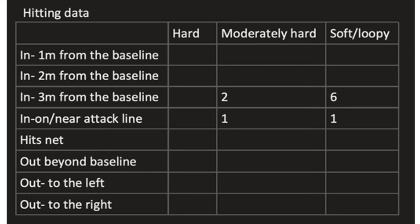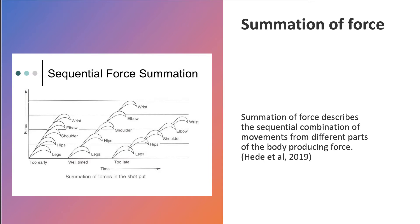Looking at data collected from 10 of my hits, the majority of them were classified as soft and loopy. This would make them ineffective, as they are easy for the opposition to return. Under the body and movement concept's quality of movement, I am not meeting the components of speed and force development. This links to another one of my biomechanical weaknesses: summation of force. My hit is not effective, as it is easy for the opponent to return.